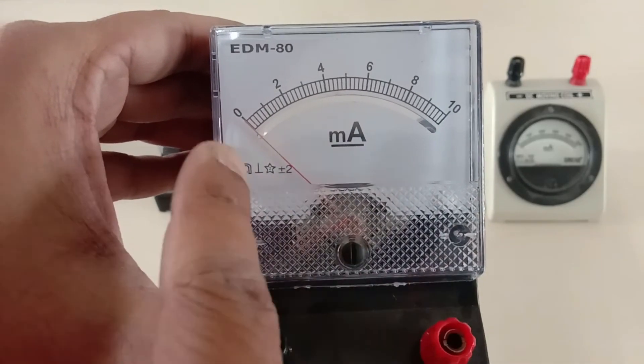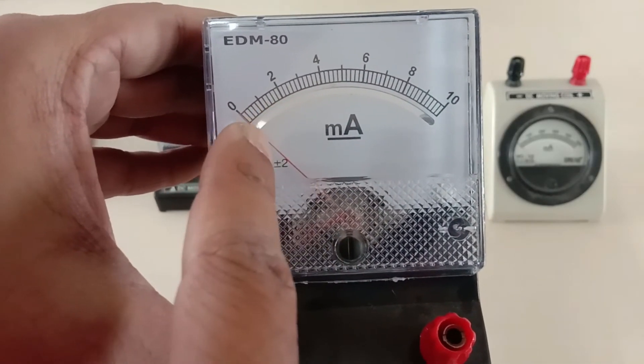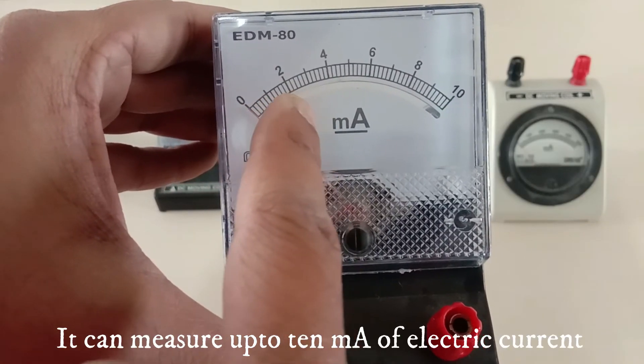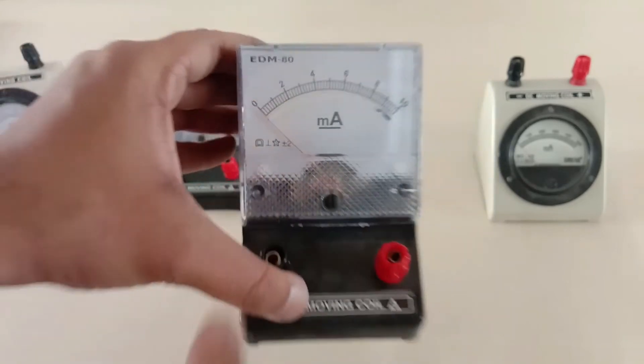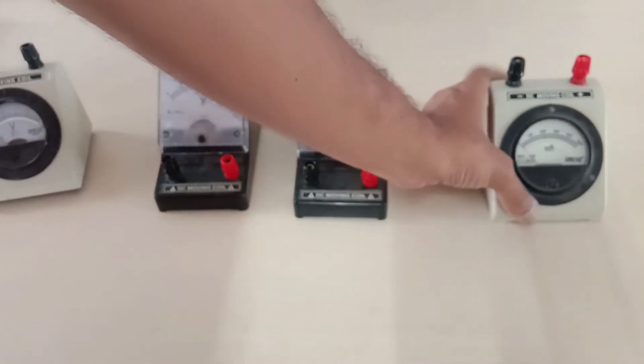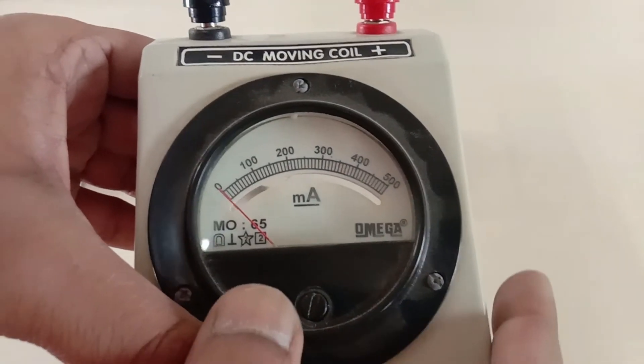We have an ammeter. An ammeter can measure electric current but it measures in milliampere - you can see small m and a that corresponds to milliampere. Again between 0 to 2 we have 10 divisions, so one division corresponds to 0.2 milliampere.